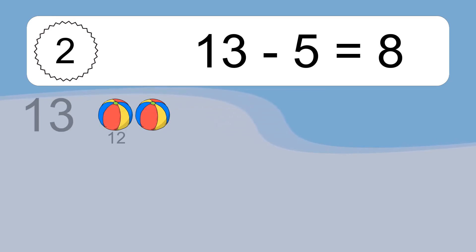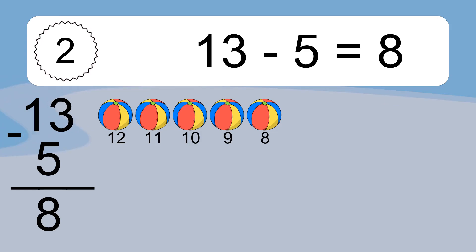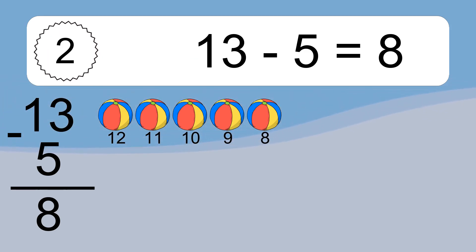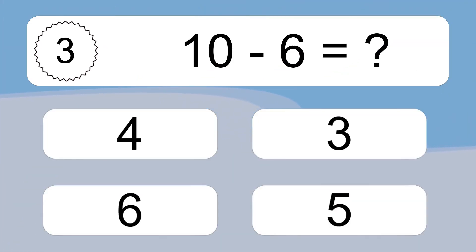13 minus 5 equals what? 13 minus 5 equals 8. Let's count it: 12, 11, 10, 9, 8.